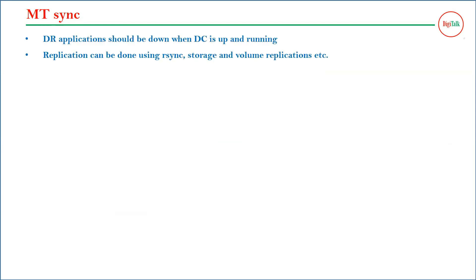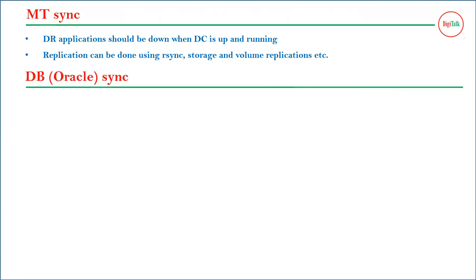Now the question on MT sync — how do we do middle tier sync, where we replicate the complete file system from DC to DR. DR applications should be down when DC is up and running. Most of the time when your DC is up, we bring down the DR application so we can copy content offline. The content from primary DC can then be copied to the secondary DR center. Replication can be done using rsync, storage replication, and volume replication techniques. If you want to replicate only the software, an easy way is to enable rsync — which is an incremental-based technique for copying content.